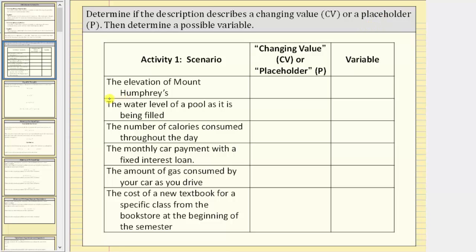First, we have the elevation of Mount Humphreys. If we use a variable to represent the elevation, because the elevation doesn't change, the variable would be a placeholder, and therefore we enter p. For the variable, let's use e to represent the elevation.